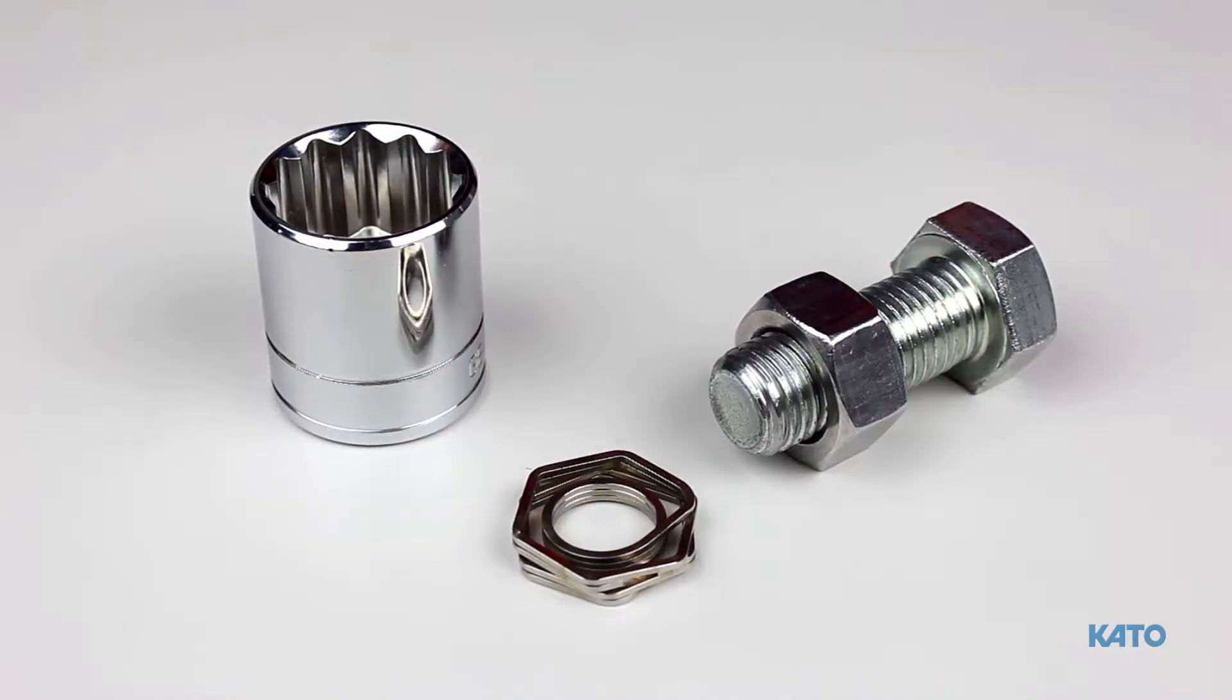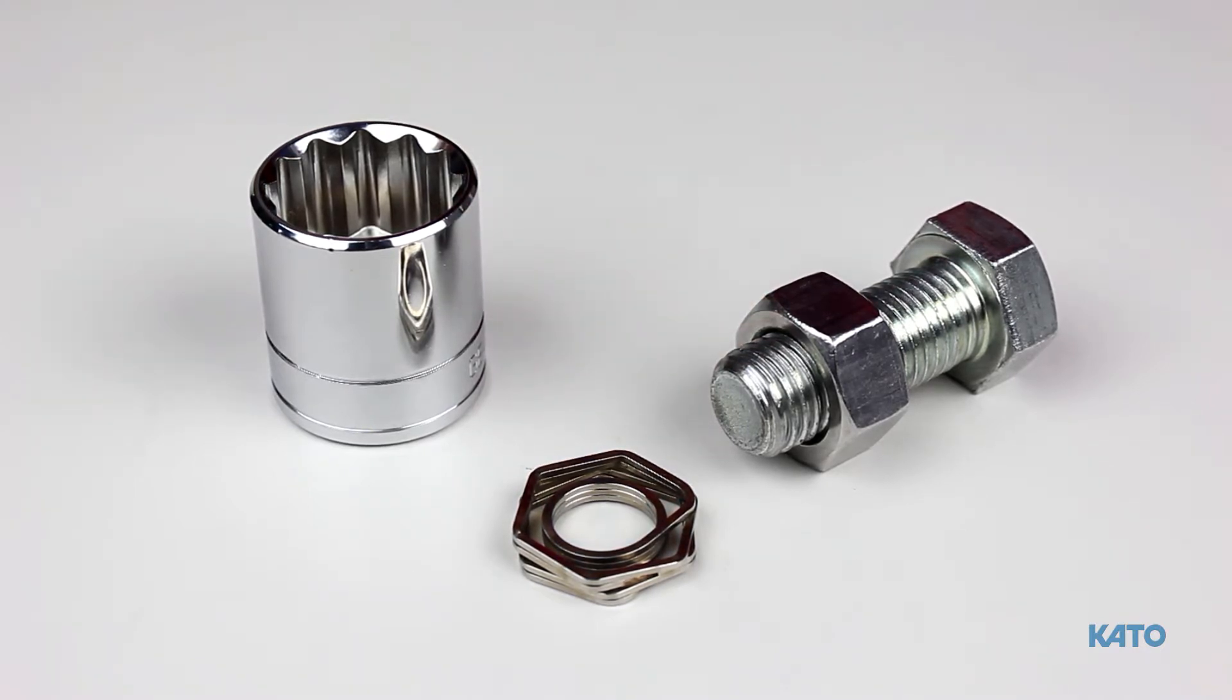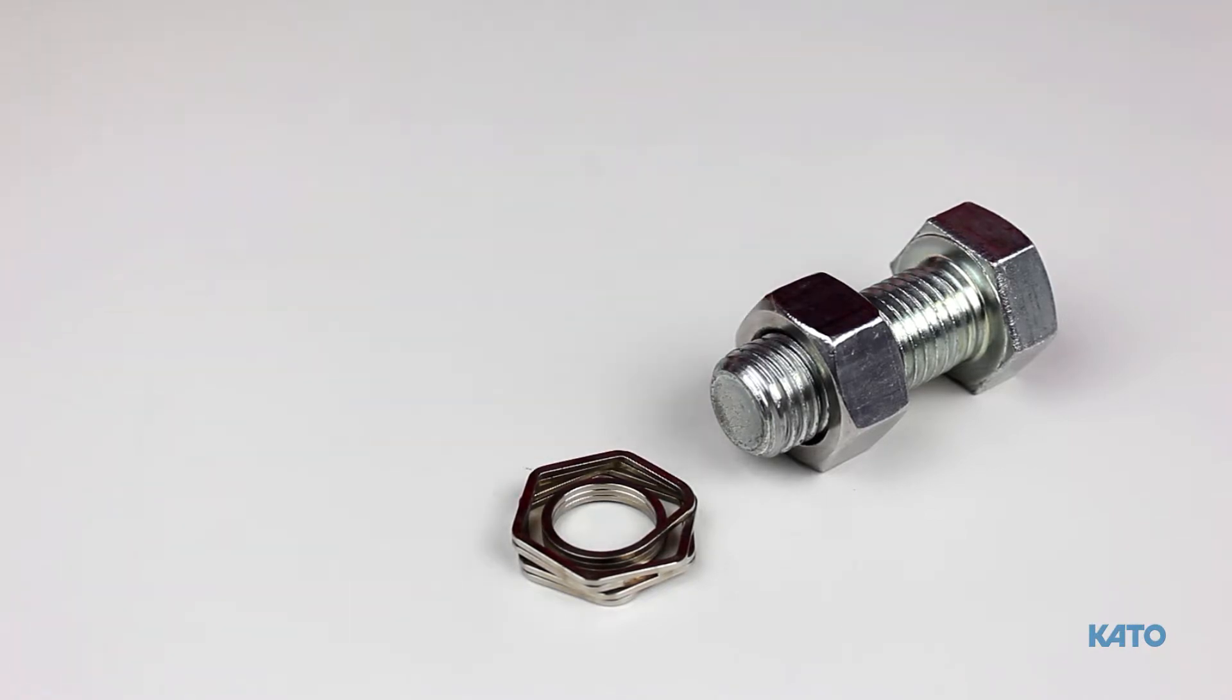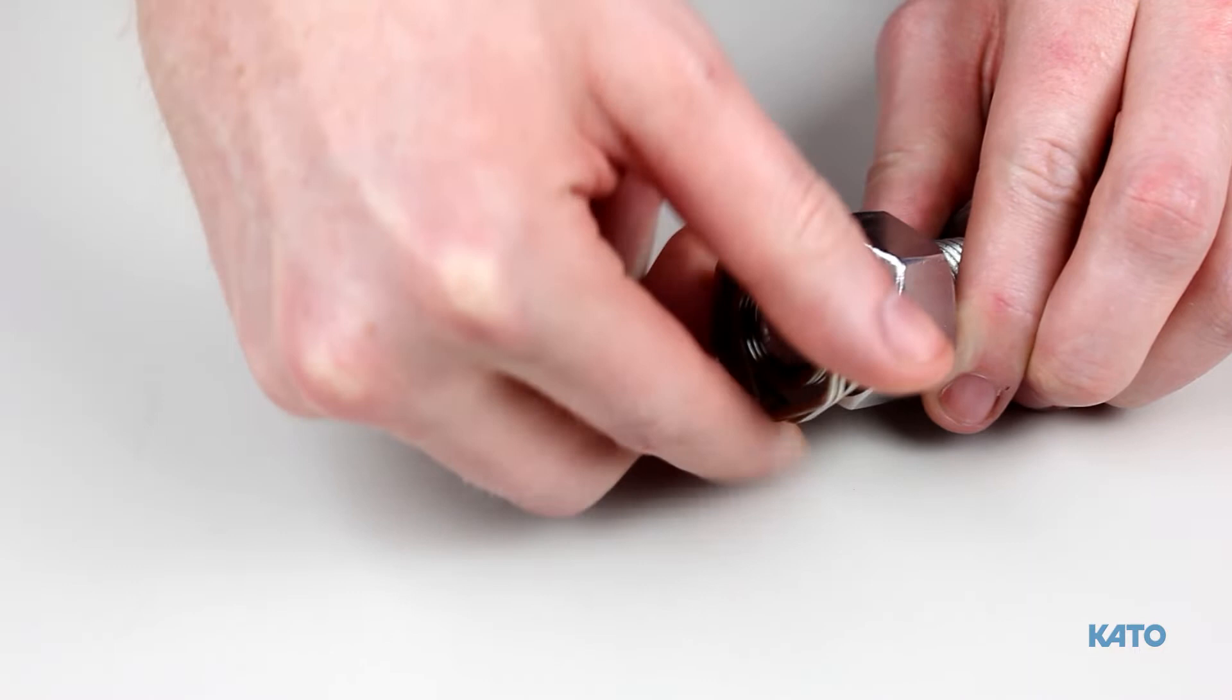For existing applications, all that is required are three bolt threads beyond the nut to accommodate the Lock One Fastener. Lock One can be threaded on with a 12 point socket or manually. Just thread Lock One until it is up against the nut.